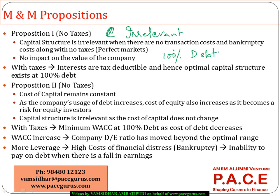These are the two major conclusions from M&M Proposition 1: if there are no taxes, capital structure is irrelevant; if there are taxes, 100% debt is most optimal. Moving to Proposition 2, as leverage increases — as the debt-to-equity ratio increases — the cost of equity will keep increasing, but the overall cost of capital actually remains constant.